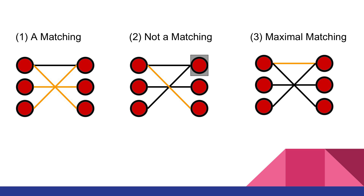Finally, in this third example we have a maximal matching. This is what we aim to output using the Hopcroft-Karp algorithm. A maximal matching is when we have the largest possible number of edges in the matching and there are no more augmenting paths. Therefore, we will need to understand what an augmenting path is.